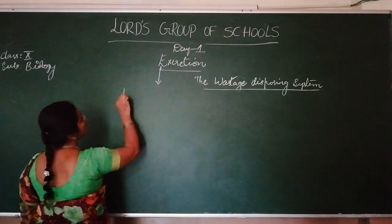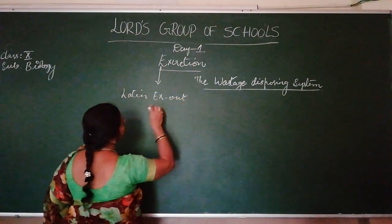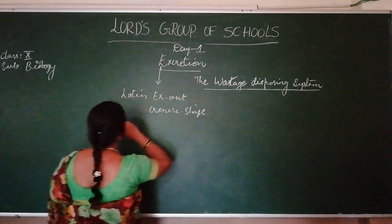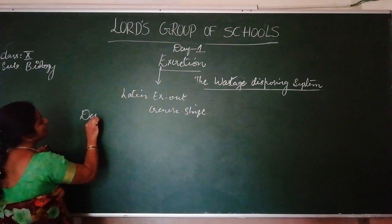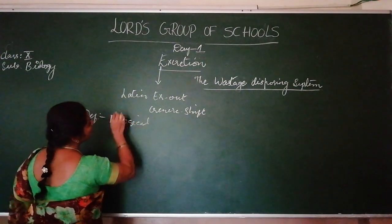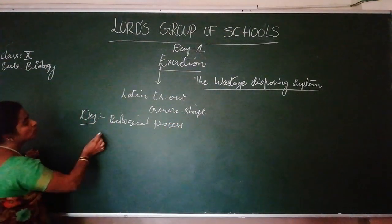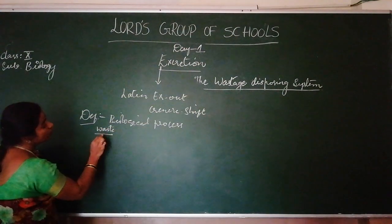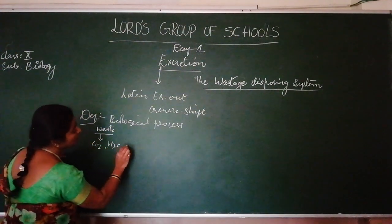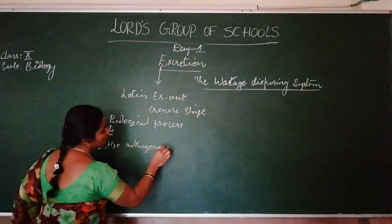The word excretion comes from the Latin word — 'ex' means out and 'cernere' means to sift. Excretion is a biological process — it is the process of eliminating unwanted materials from the body. The waste materials present in the body include carbon dioxide, water, and nitrogenous compounds.